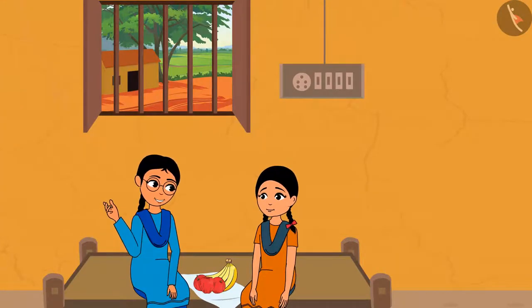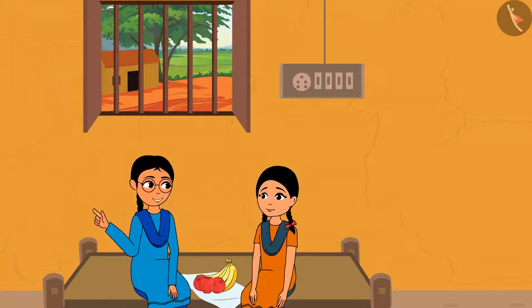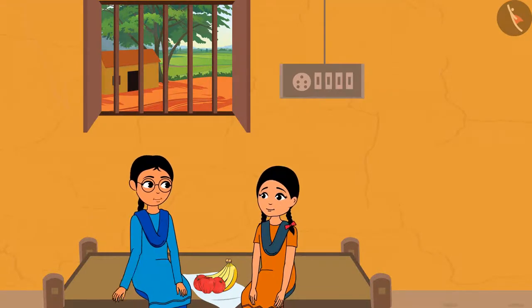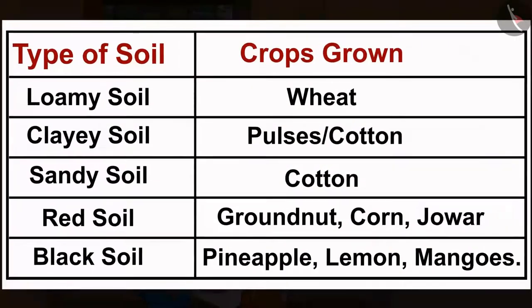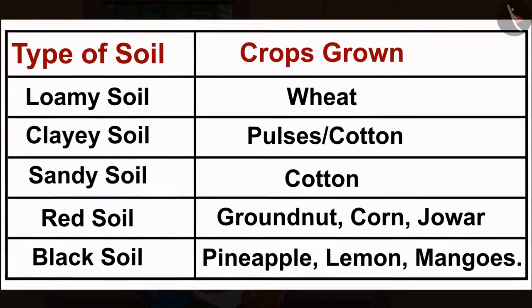Minu wonders whether natural calamities like floods and volcanoes help in making the soil fertile. They decide to ask their teacher this question when they show her the list the next day. The host wraps up, noting that different types of soil like sandy and loamy are appropriate for wheat and gram, and that the correct soil type is essential for cultivating particular crops. Understanding that farmers grow crops according to the soil type, the host signs off until the next video.